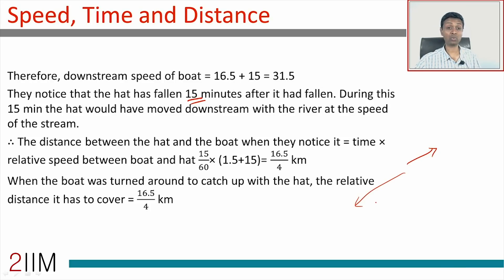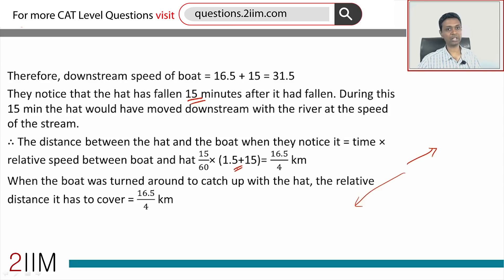How much distance would have come in between the two of them is time into relative speed. Relative speed is 1.5 plus 15. They are moving up at 1.5, the stream is moving down at 15. They are moving away from each other at the speed of 16.5 miles per hour.